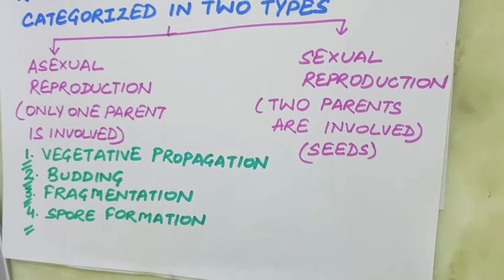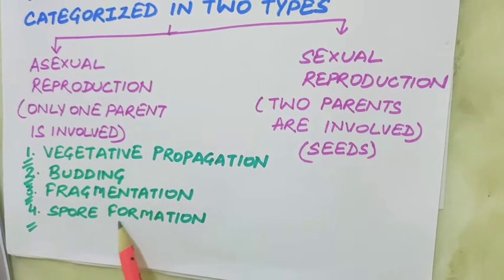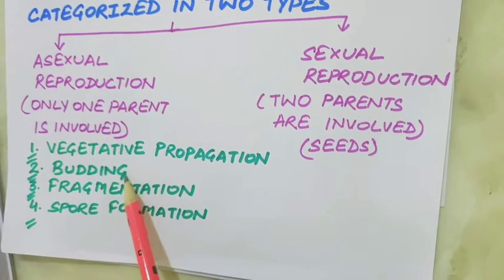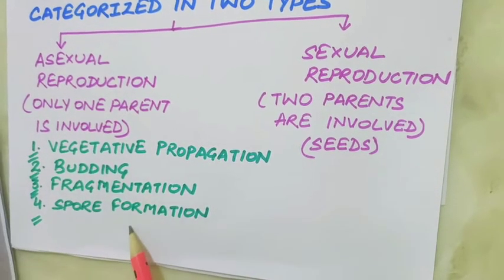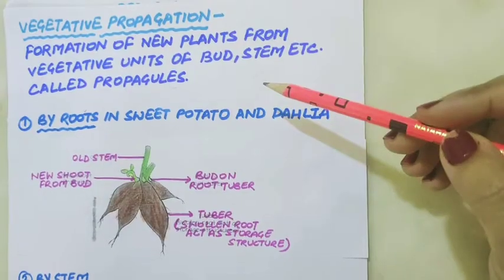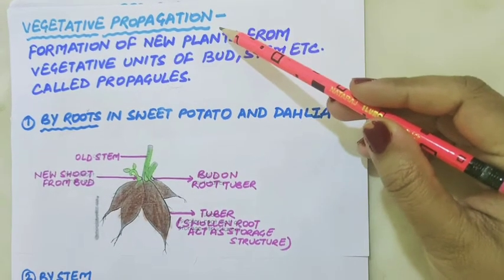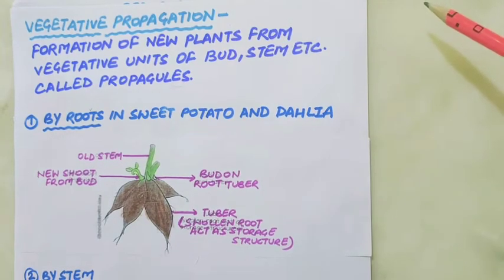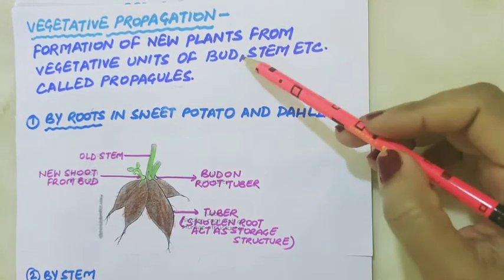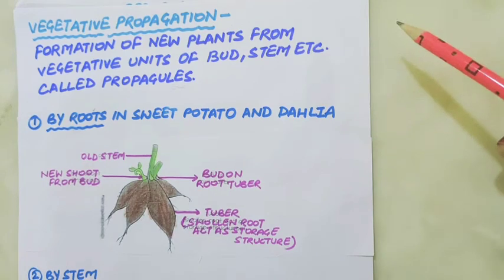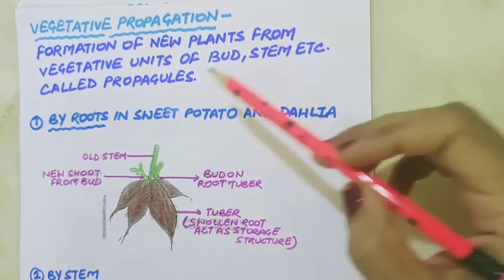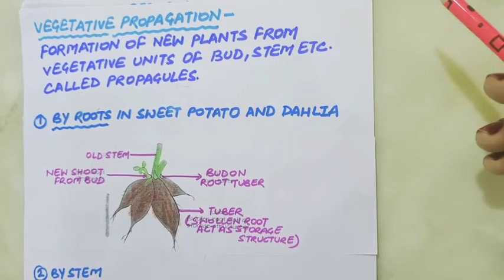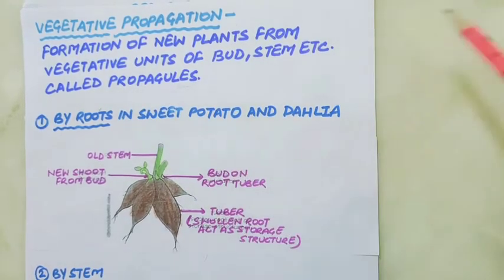Asexual reproduction in plants occurs through various methods: vegetative propagation, budding, fragmentation, and spore formation. One method of asexual reproduction is vegetative propagation. It is the formation of new plants from the vegetative units of bud, stem, roots, and leaves. These vegetative units are called propagules. Vegetative reproduction may also take place using roots of the plant.